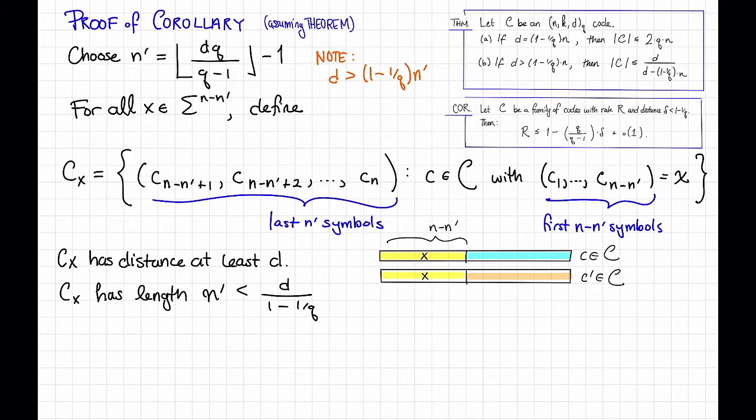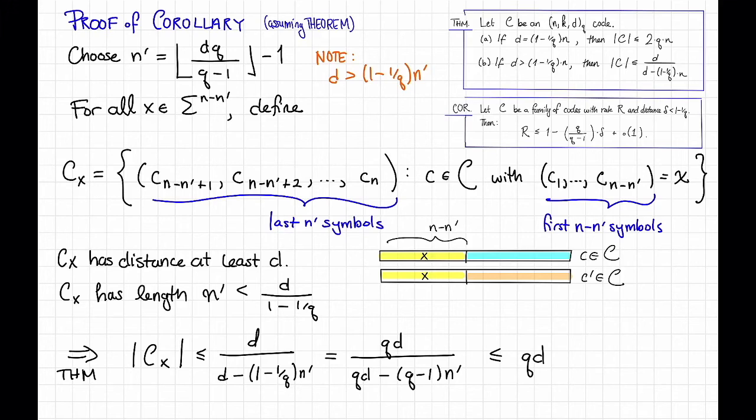Now, let's apply our theorem, which I copied up here, to c sub x. The theorem implies that the size of c sub x is at most d divided by d minus 1 minus 1 over q times n prime. That's part b of the theorem. Multiplying the top and the bottom by q, we see that this is equal to q times d divided by q times d minus q minus 1 times n prime. And this is at most q times d. The reason this is at most q times d is that this denominator is greater than 0, and it's an integer, so it better be greater than or equal to 1. Okay, so the size of each c sub x is at most q times d.